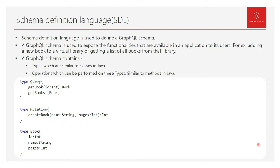A GraphQL schema typically contains types, which are similar to classes in Java. These types can have fields, which are equivalent to instance variables in a Java class, and operations which can be performed on these types, similar to methods in Java.